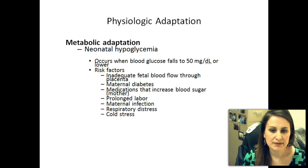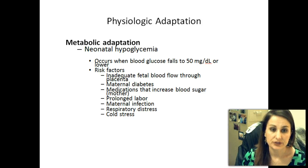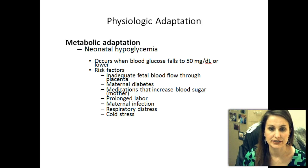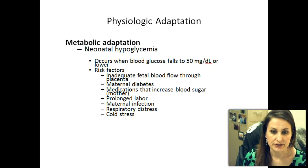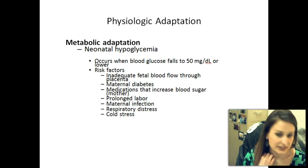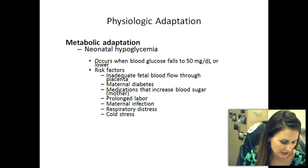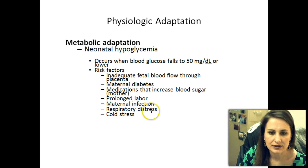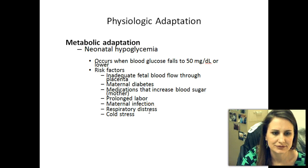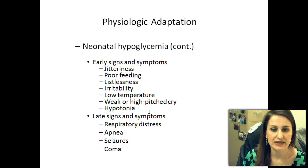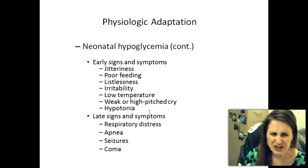Moving to metabolic adaptation — neonatal hypoglycemia. This occurs when the blood glucose falls below 50 milligrams per deciliter or even lower. What you'll see with these babies is often a shrill, high-pitched cry. Early signs include jitteriness, poor feeding, listlessness, and irritability. They're just not happy babies — very fussy.